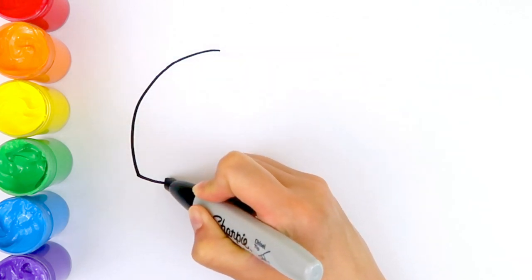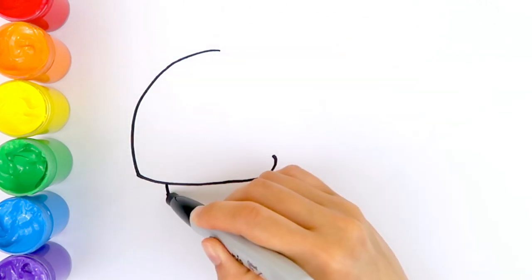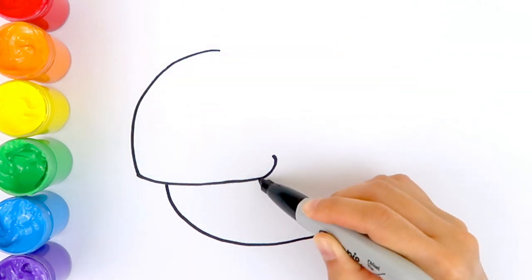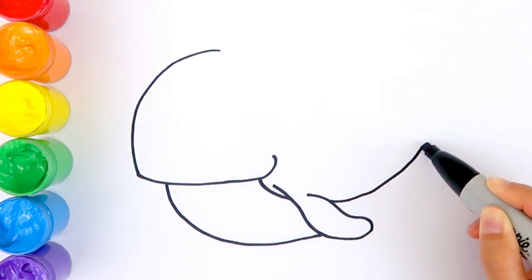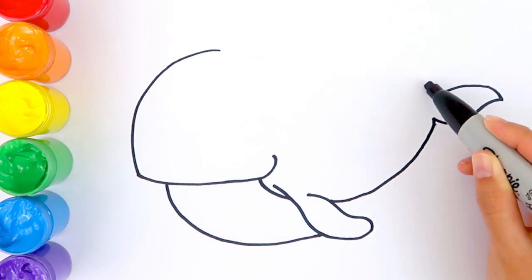Now, we're going to draw a whale. Let's get started. This is going to be whale's arm, also called flipper. And here is the tail.